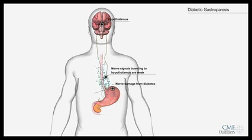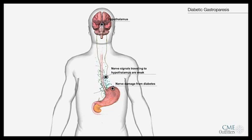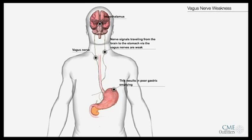Hence, when ghrelin is released by the stomach, it cannot travel up in an orderly and quick manner to reach the hypothalamus. Because the vagus nerve is weak and non-functioning, ghrelin that does not enter the brain is unable to activate the signal, resulting in poor gastric emptying.